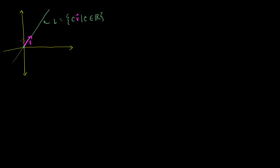We know, of course, if this wasn't a line that went through the origin, you would have to shift it by some vector — it would have to be some other vector plus cV. But anyway, we're starting off with this line definition that goes through the origin. And what I want to do in this video is to define the idea of a projection onto L of some other vector x.